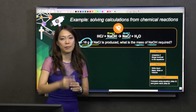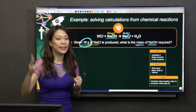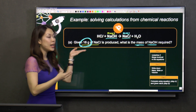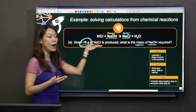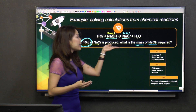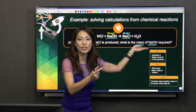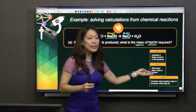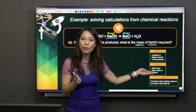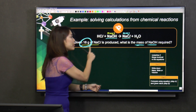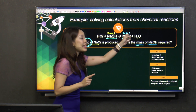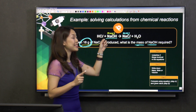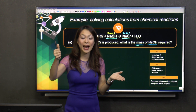Let's recap the two steps. Step one: underline two things that are involved. How do you find the two things? It's always in the question. They say 16 grams of sodium chloride — I underline sodium chloride. They say what is the mass of sodium hydroxide — I underline sodium hydroxide. Step two: write down mass, mole, or volume. 16 grams refers to mass, and mass of NaOH — so I write down mass. Step one done, step two done.